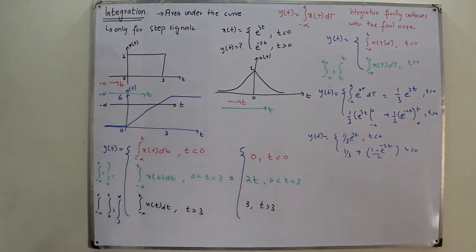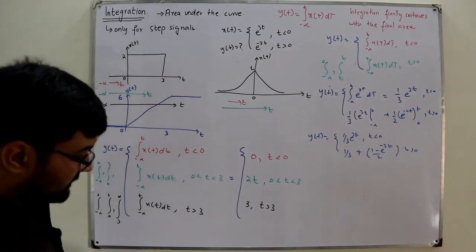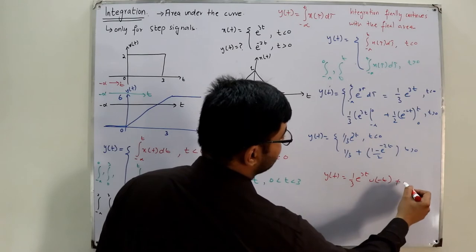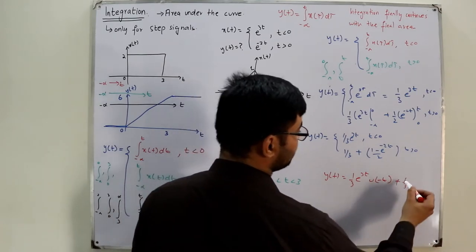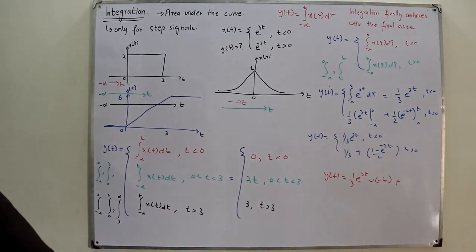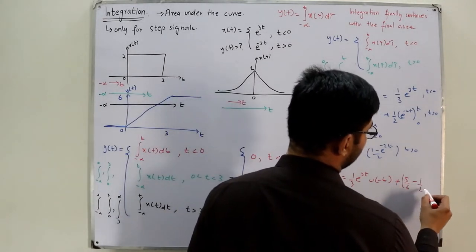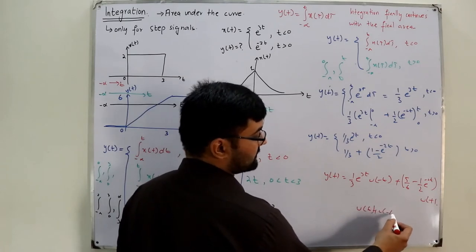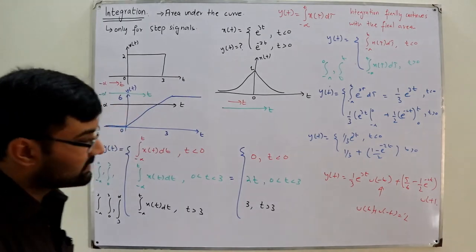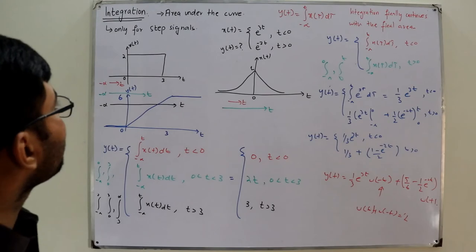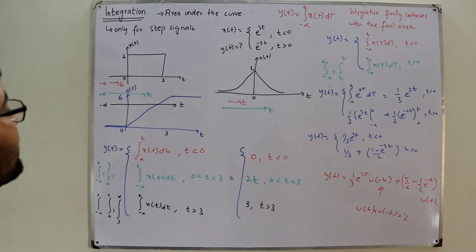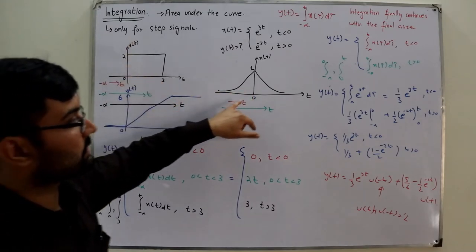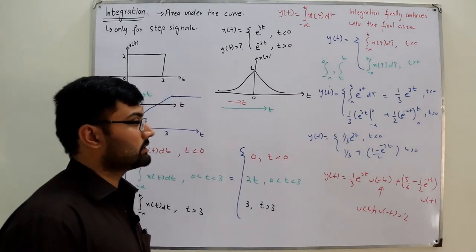Using the unit step signal, we can write this all together: y(t) = (1/3)e^(3t)·u(−t) + [5/6 − (1/2)e^(-2t)]·u(t). You can further simplify using u(t) + u(−t) = 1. This is the final answer. Note: the graphical method is only for step signals; this mathematical/barrier method works for all signal types.